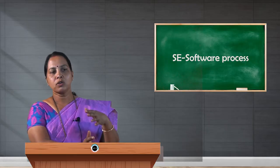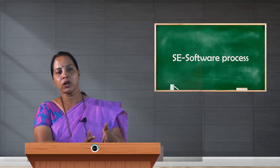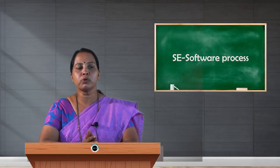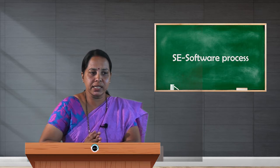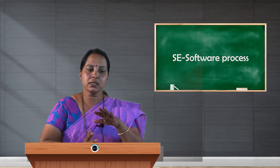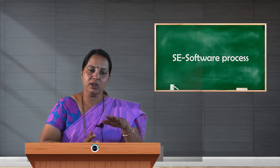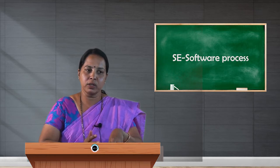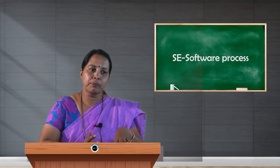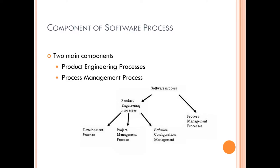The product engineering process is categorized into three parts: the development process, the project management process, and the software configuration management process.